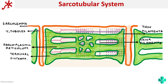The T-tubule and the two terminal cisternae form the triad present in skeletal muscle — T-tubule plus two terminal cisternae. These are the basic components of the sarco tubular system.